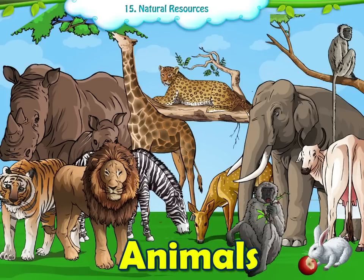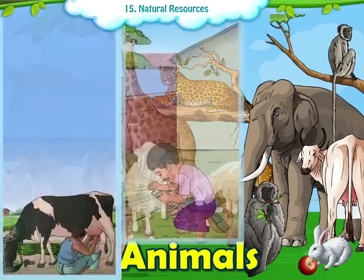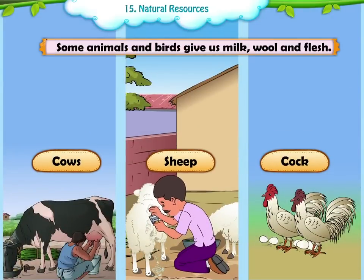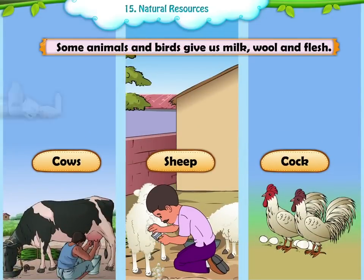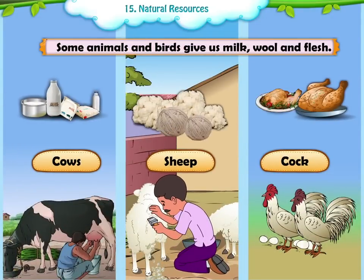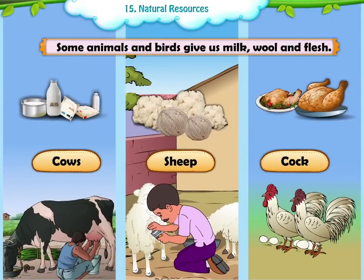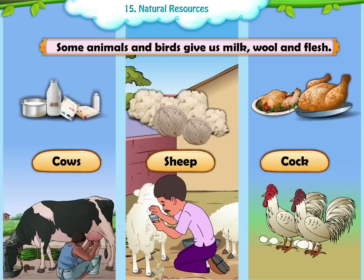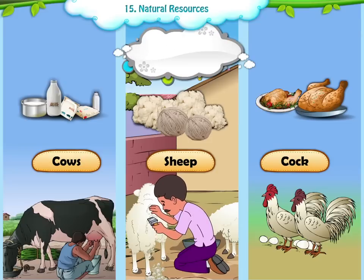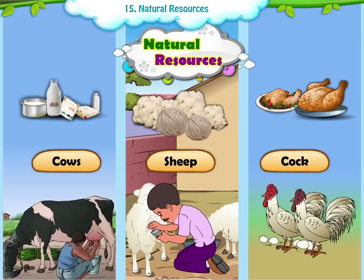Animals. Some animals and birds give us milk, wool and flesh. All these things which are obtained from the birds and animals are called natural resources.